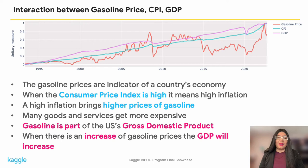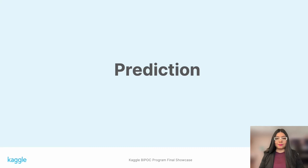We can see there are external variables that interrelate with gasoline prices. When the consumer price index is high, it means high inflation, where goods and services get more costly, including gasoline. Likewise, gasoline production and distribution is part of the gross domestic product, meaning that when gasoline prices go up, GDP increases as well.